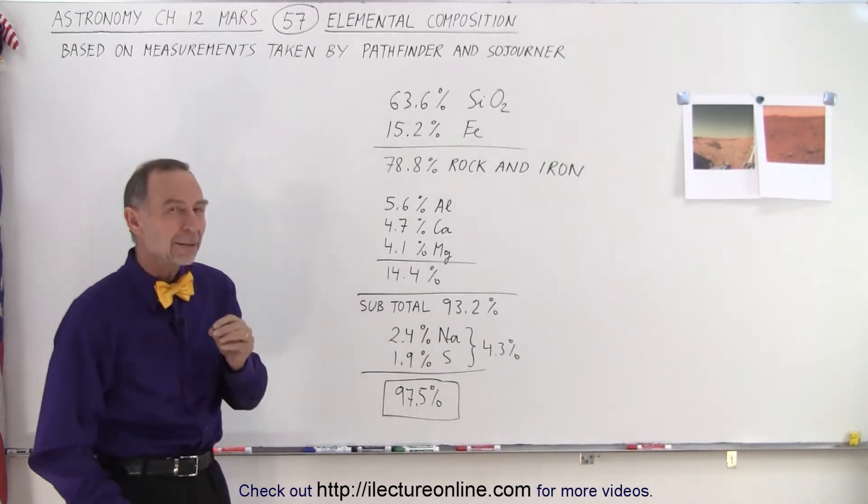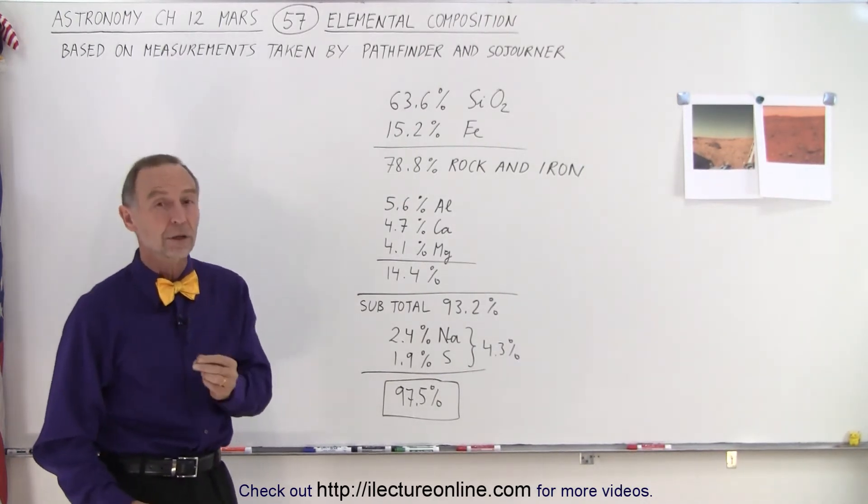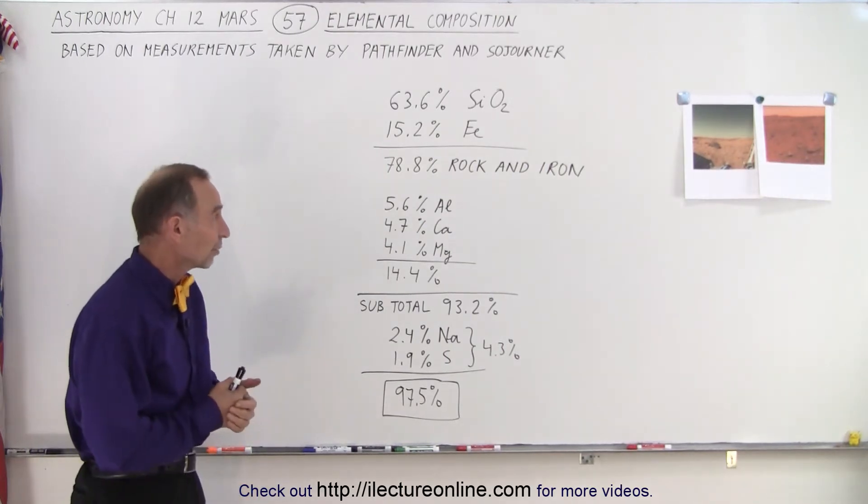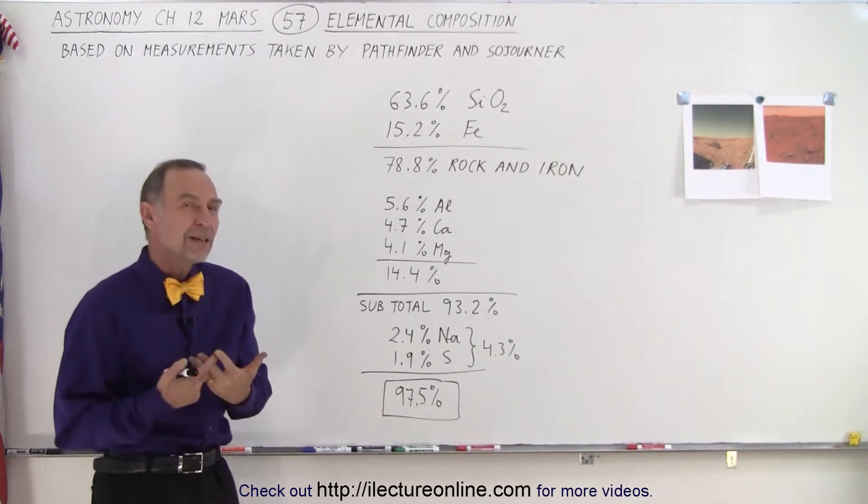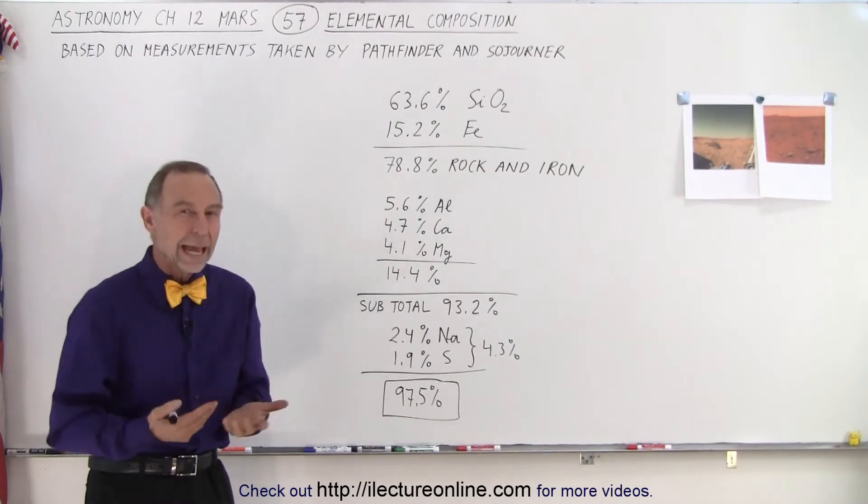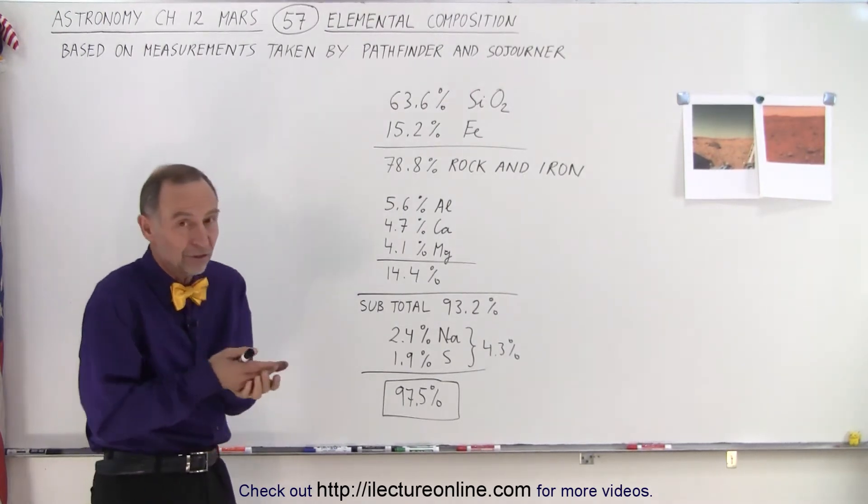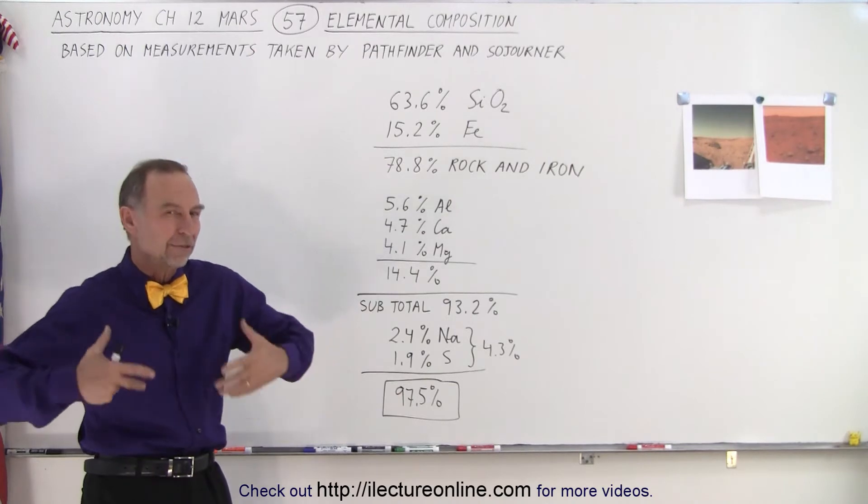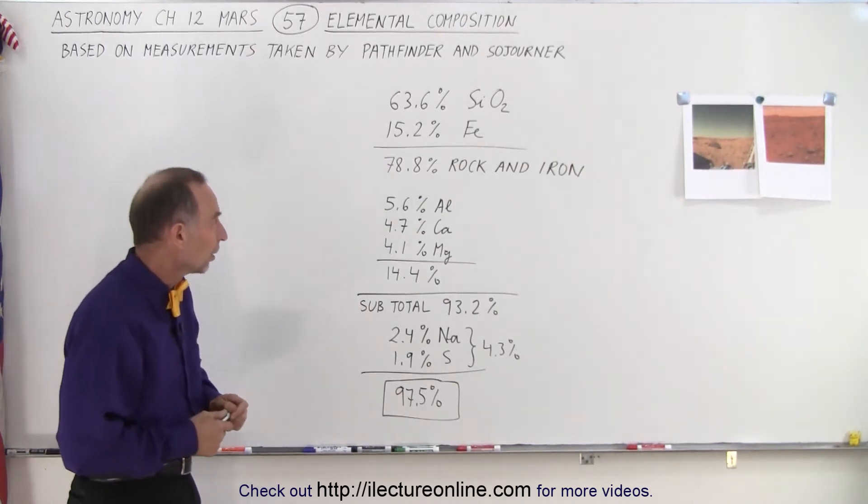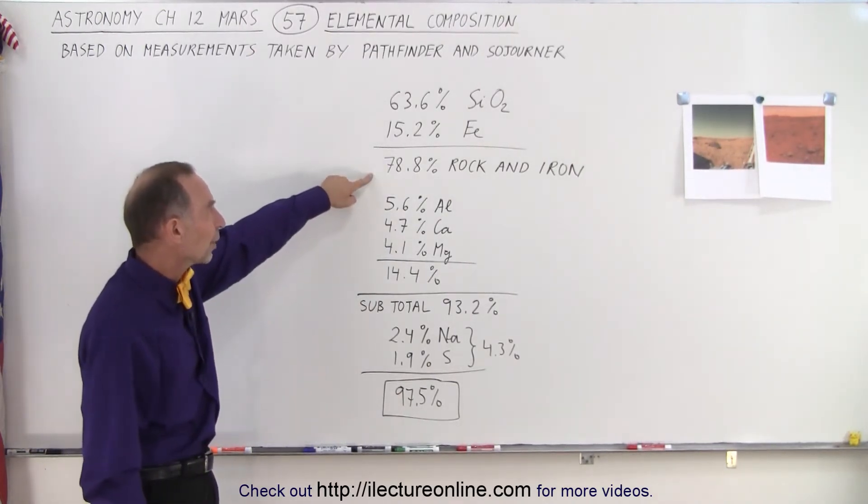But on Mars was also a very high percentage of iron in the soil. At the landing site of Pathfinder and Sojourner, as much as 15% of what they were analyzing was iron. Of course, it is the oxidation of the iron on the surface that gives Mars its red color. So almost 80% of what was found on the surface was rock and iron.